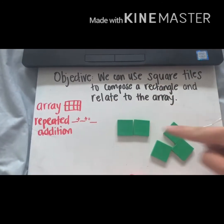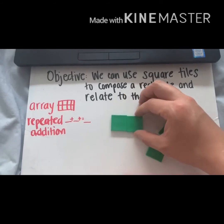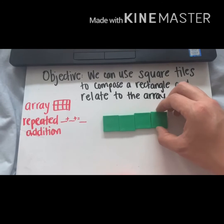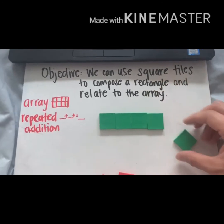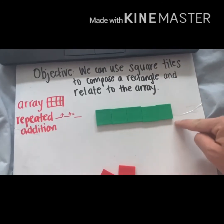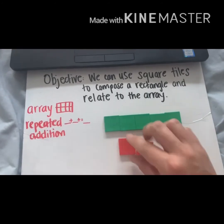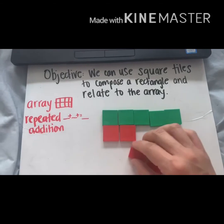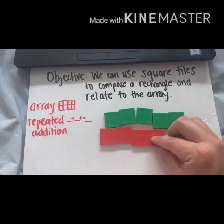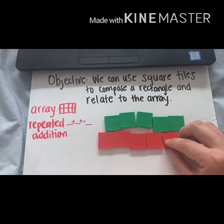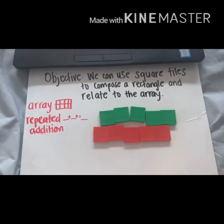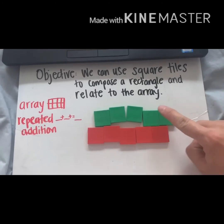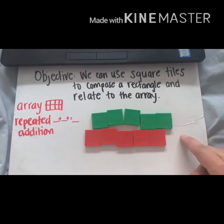Rows are horizontal, side to side. So we place one, two, three, four, five tiles in the first row, then make our other horizontal row: one, two, three, four, five. Now are they equal? Yes, because there are five in each one.